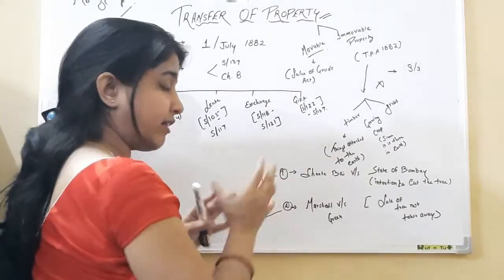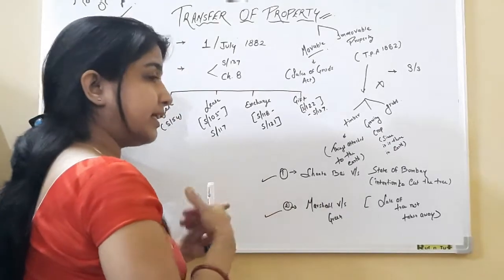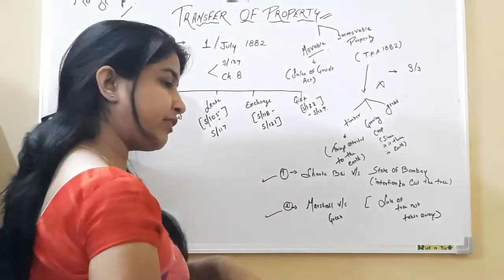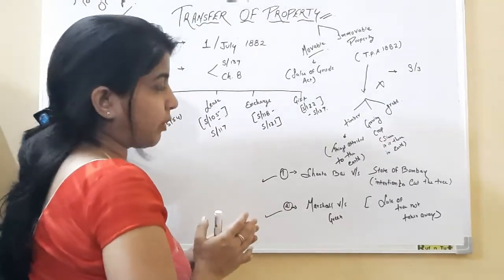Similarly, Marshall versus Green. If you have intention that the tree will be attached to the earth and the fruit will be there, because when you cut the fruits, that becomes a movable property.